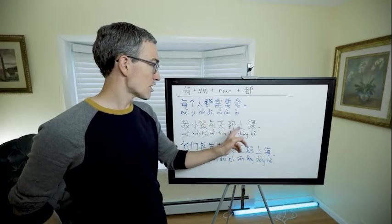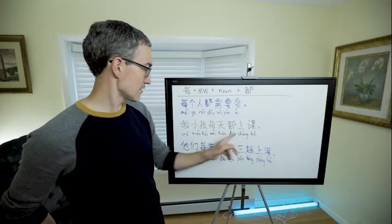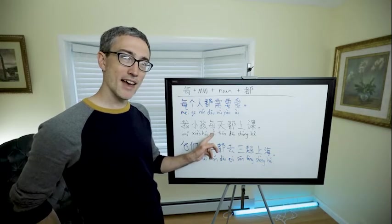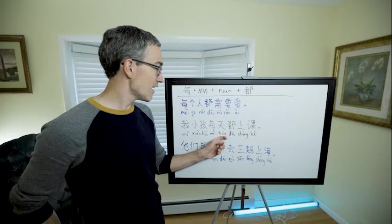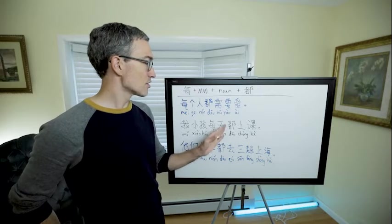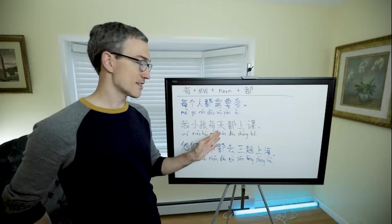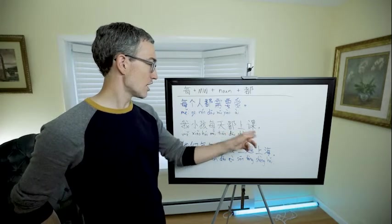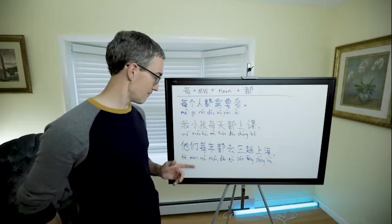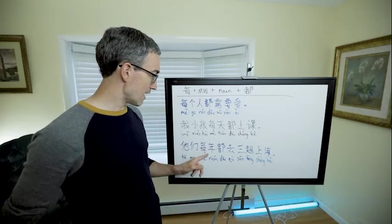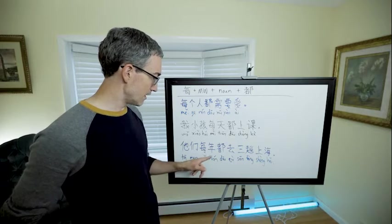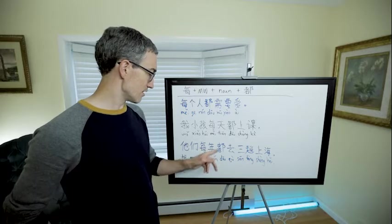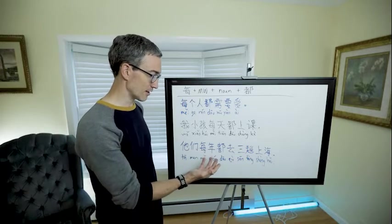每个人都需要爱. 我小孩每天都上课 (wǒ xiǎohái měitiān dōu shàngkè) - 上课 means goes to class. 我小孩 means my child. 每天, what does that mean? Every day. And again, 天 is a measure word here, so there's an understood noun of time but we're not going to say it. 每天 just means every day. 我小孩每天都上课 - my child goes to school every day. 他们每年都 (tāmen měinián dōu) - this is very similar. 每年, every year. Again, 年 is a measure word and the noun is not there, it's understood to be time probably.